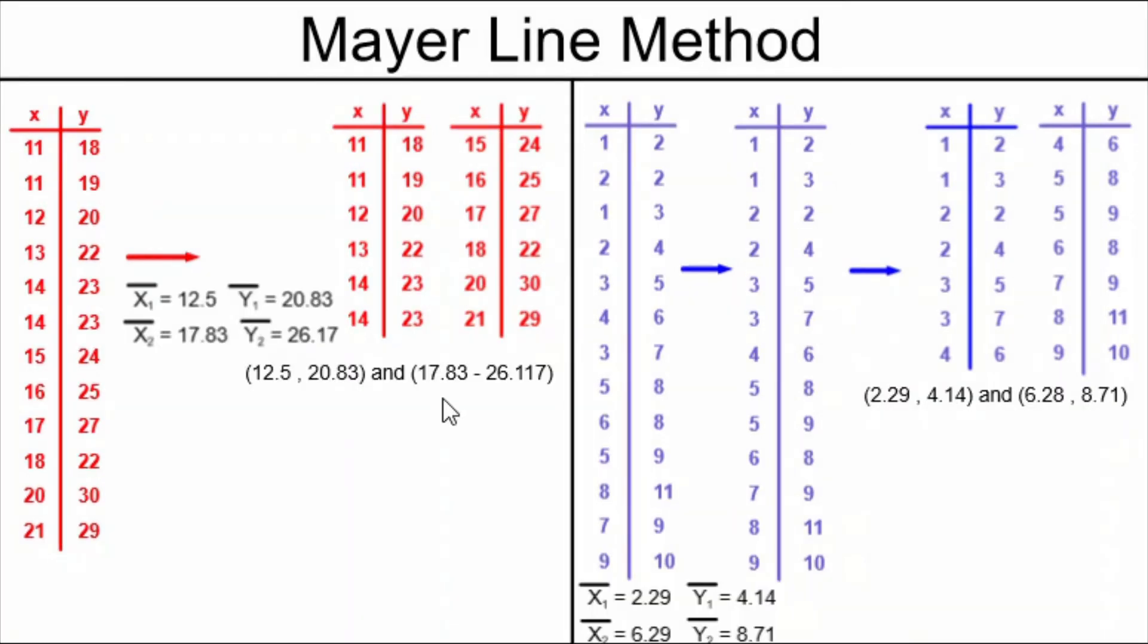Then the rest of the method is really a review for students in this course because the rest of the method is to make a straight line equation in y equals ax plus b form using those two points. For the red example, we do the slope formula. We get a slope of 0.01.